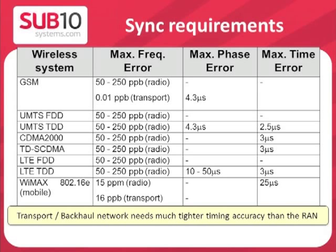The important thing to note is that the transport network actually needs much tighter timing accuracy than the radio access network. For example, a RAN specification of 50 parts per billion frequency accuracy means the transport or backhaul network needs to be accurate to 16 parts per billion — around four times more accurate than the RAN. This is quite a stringent requirement.